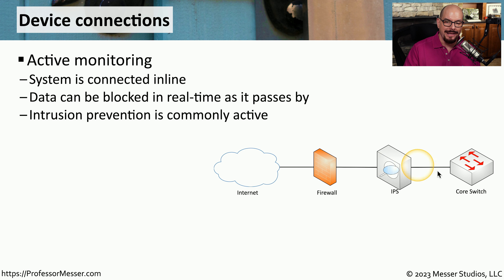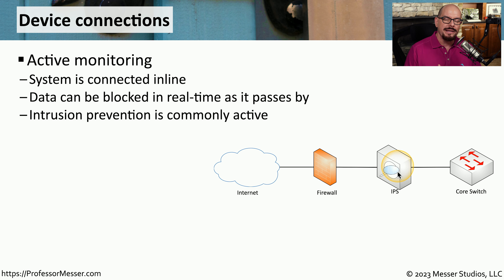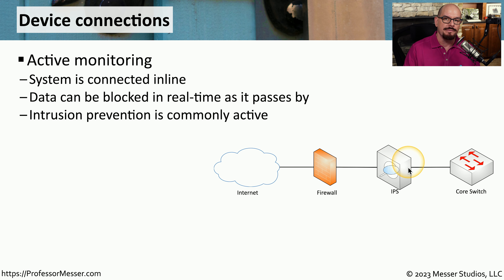This is an example of an inline configuration. There is an internet connection, a firewall, there's a core switch, and between the firewall and the switch is an IPS that is put in line doing active monitoring. As traffic traverses this link between the core switch and the firewall, the IPS is examining all of the traffic, making a decision on whether the traffic is legitimate or potentially malicious, and then it can block that traffic in the IPS itself. Because an IPS is designed to block traffic in real time, an active monitoring configuration is often the default config.